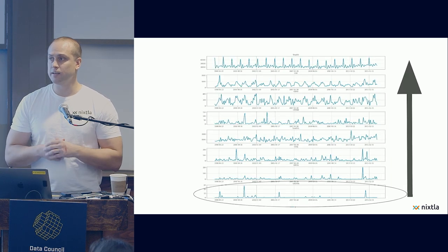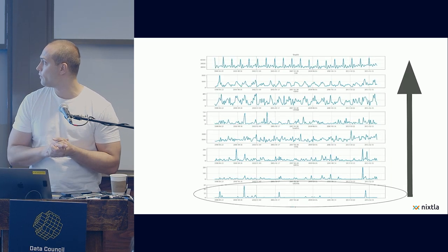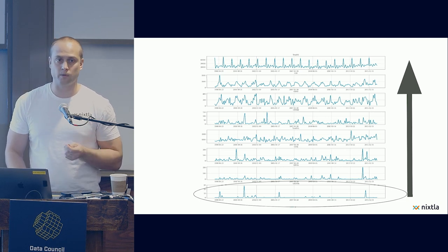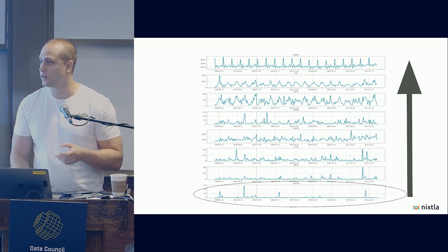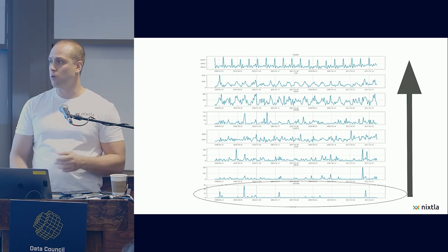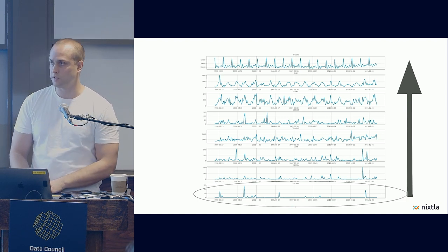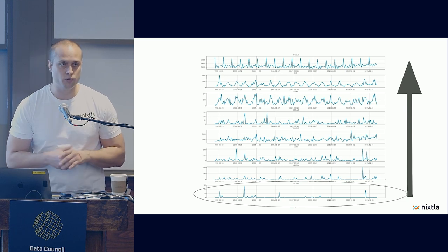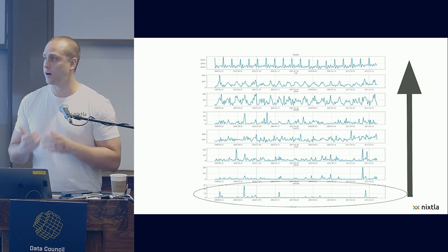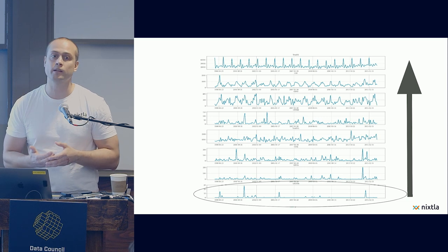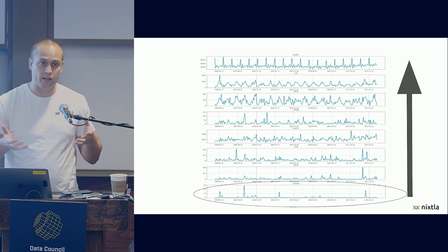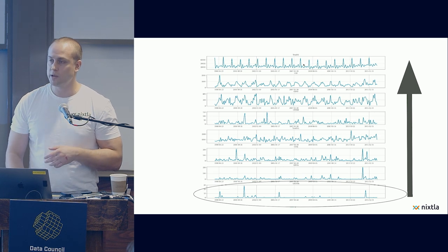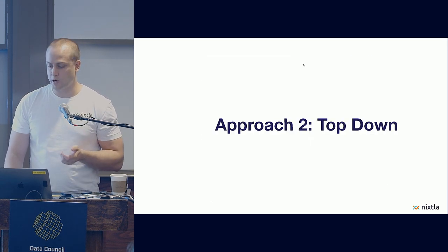The problem with that is that, as you can see here in the graph, normally lower series with more granularity are very noisy, are very sparse, are what we called in the field sparse time series. That is, they have a lot of zero values. So it doesn't matter which model you use, it's going to have a very hard time understanding and predicting it. So if you take that and predict it and then sum it up, you're going to accumulate errors, and when you reach the top, it's going to be a very bad forecast.